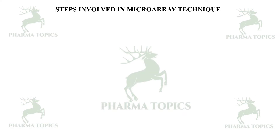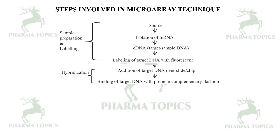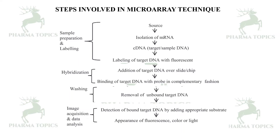The steps involved in the microarray technique are as follows. First, the sample is prepared and labeled: mRNA is taken, converted to cDNA by reverse transcriptase, and labeled with a fluorescent dye. Next is hybridization — the target DNA is added onto the chip or slide and binds to the probe in a complementary fashion. Then washing removes unbound target DNA. Finally, image acquisition and data analysis detect the bound target DNA; appearance of fluorescence, color, or light is the end point.